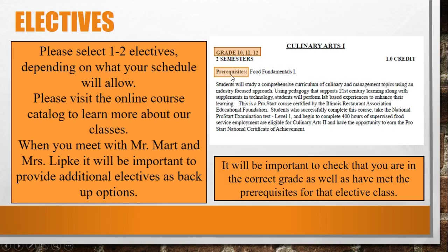When navigating through the course offerings guide to select electives, it will be important to look at two things: one, that the student has met the prerequisites for the course, and two, that the student is in the correct grade. For example, if a student wants to request Culinary Arts 1, they have to be in grades 10, 11, or 12, and have taken and passed Food Fundamentals 1.